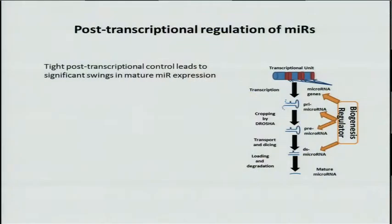I hope to convince you today that these types of interactions are really worth looking at. MicroRNAs are very tightly post-transcriptionally regulated, and changes in this regulation can lead to significant swings in the expression of mature microRNAs. MicroRNAs are transcribed — you can see the cartoon on the right — they're transcribed to produce transcriptional units, then processed to produce PRI, PRE, and finally mature microRNAs.